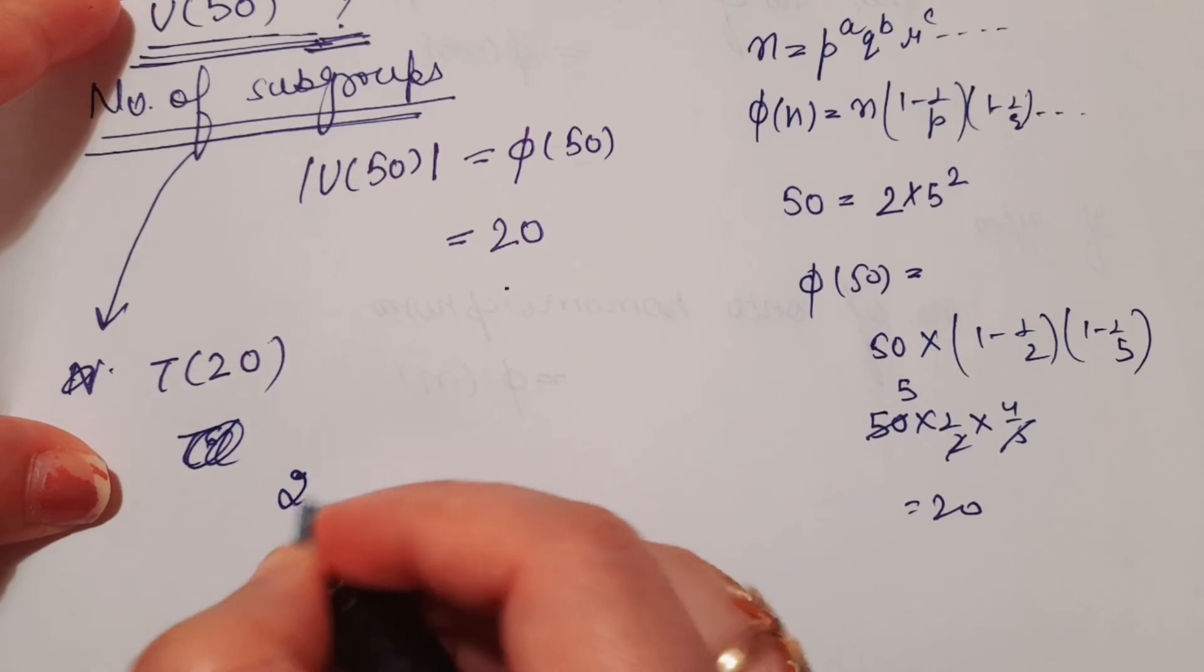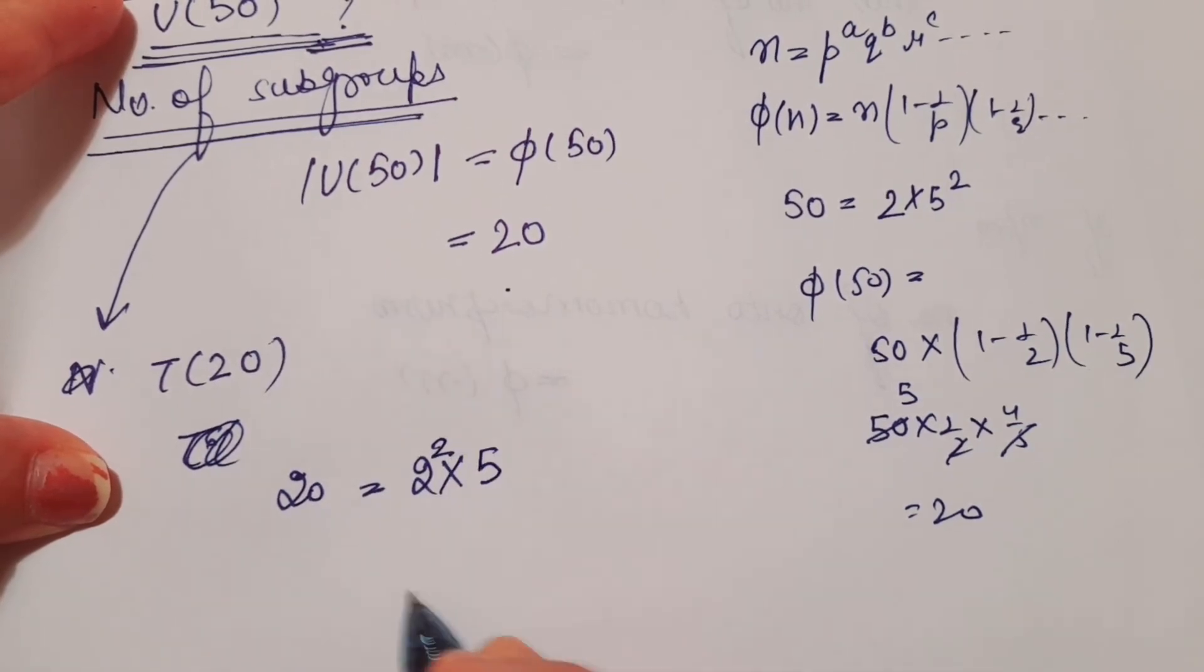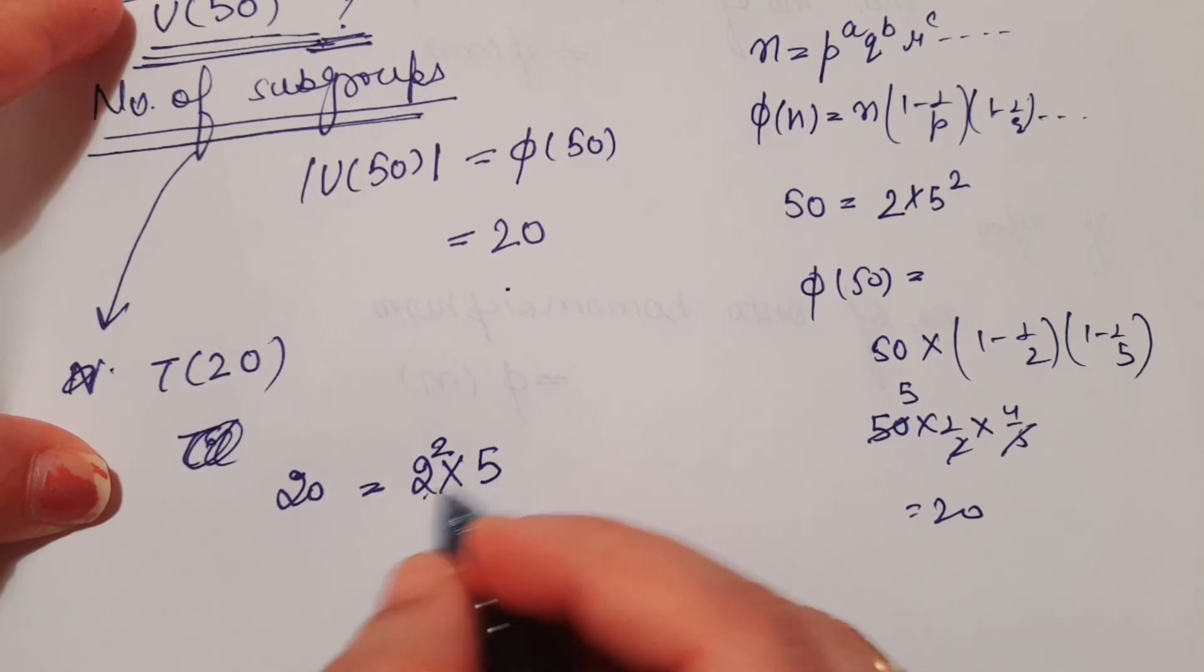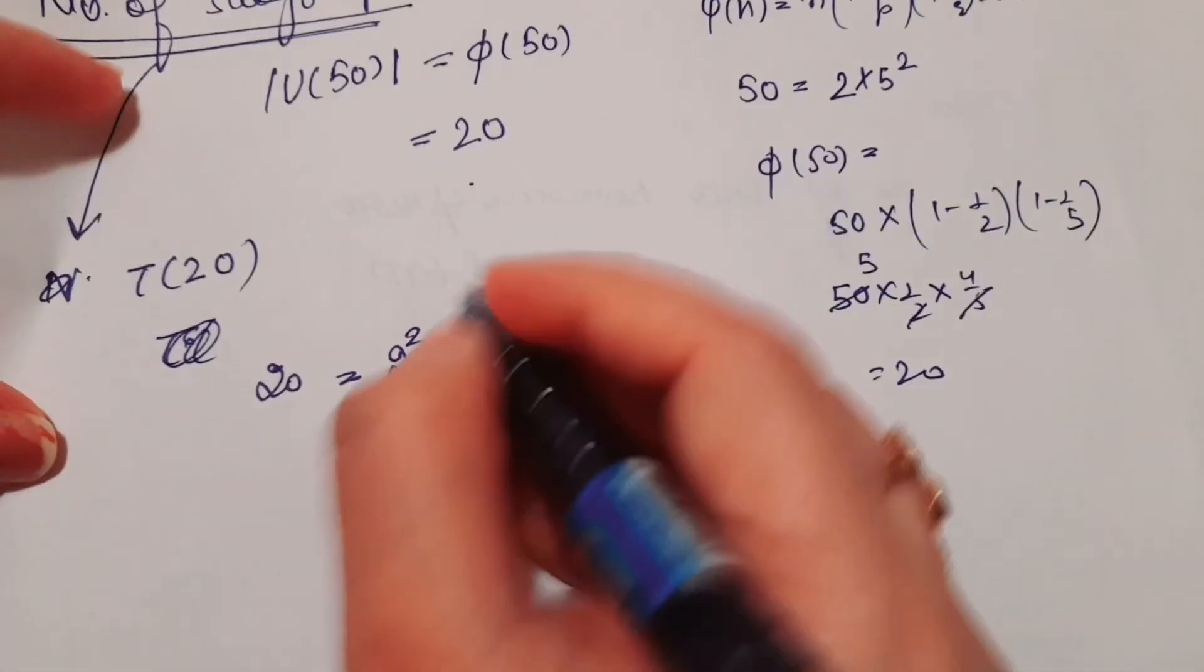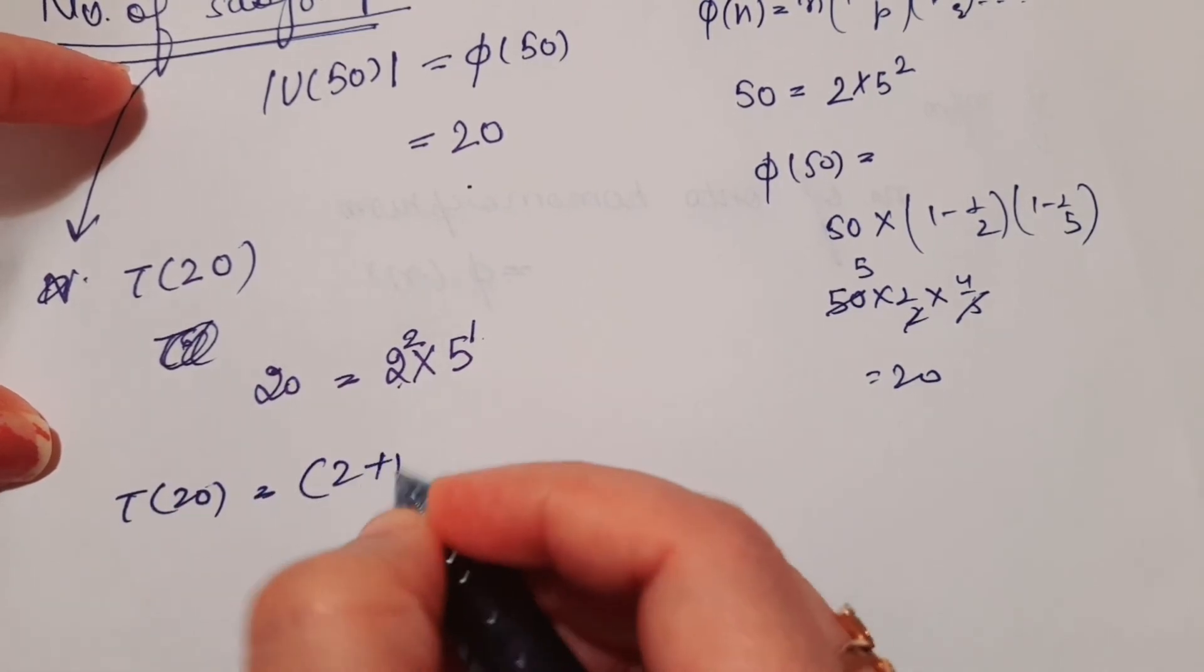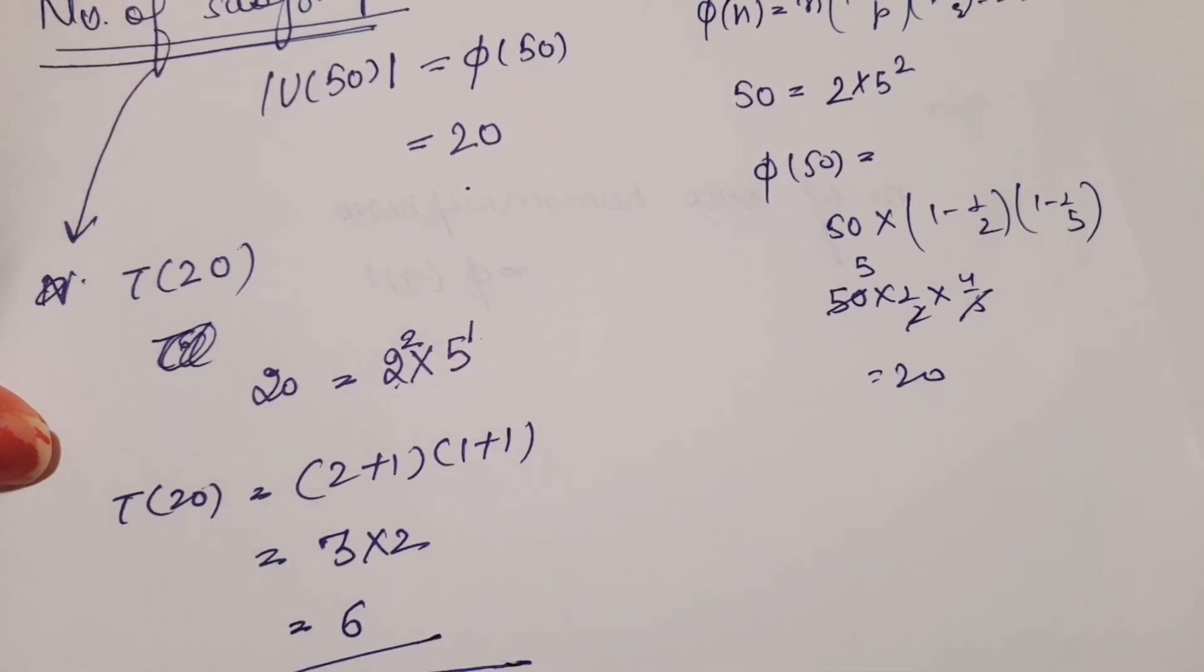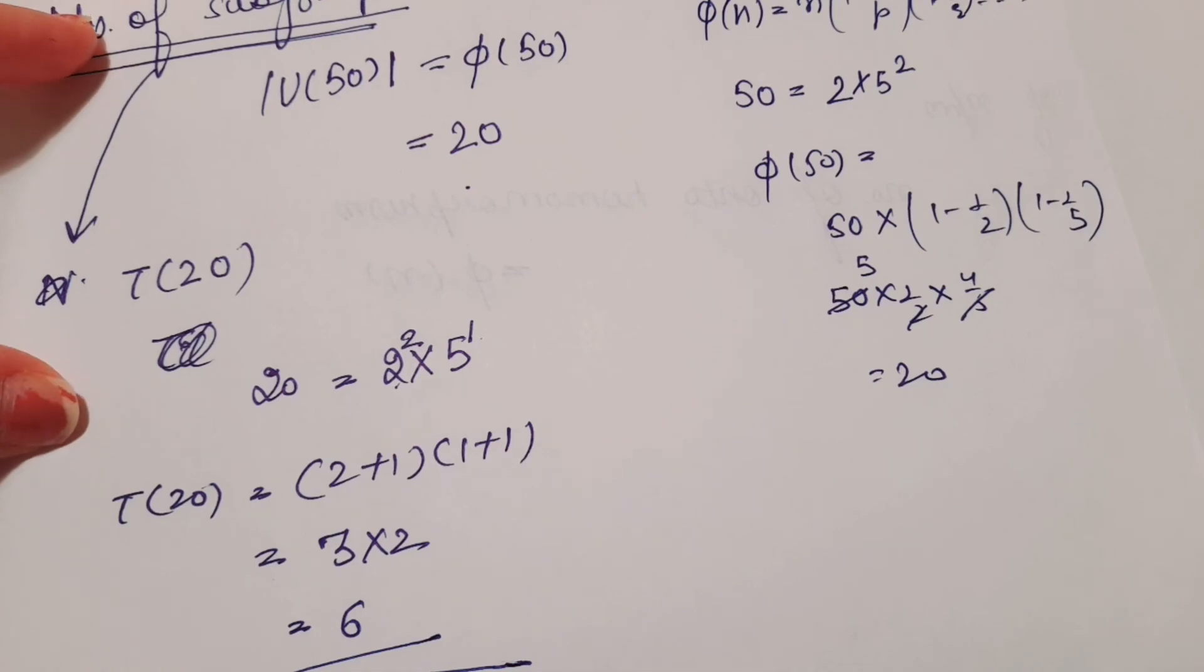20 = 2² × 5¹. So the exponents are 2 and 1. Therefore, τ(20) = (2 + 1) × (1 + 1) = 3 × 2 = 6. So the number of subgroups of U(50) is 6.